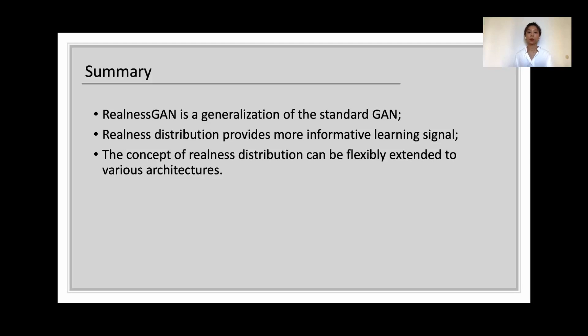To sum it up, RealnessGAN is a generalization of the standard GAN. And by directly looking into the underlying distribution of realness, the generator now receives a more informative learning signal. Additionally, this concept can be flexibly extended to various architectures like progressive GAN and conditional GAN without introducing much overhead.